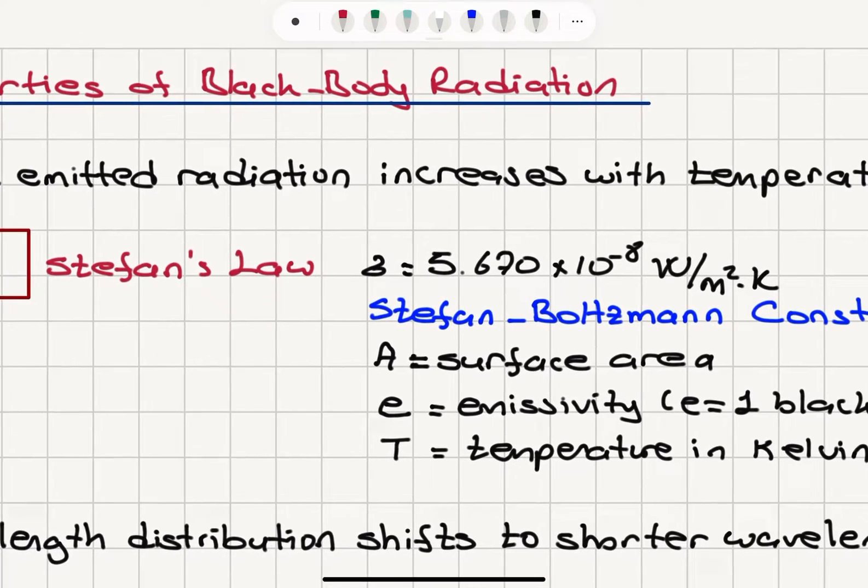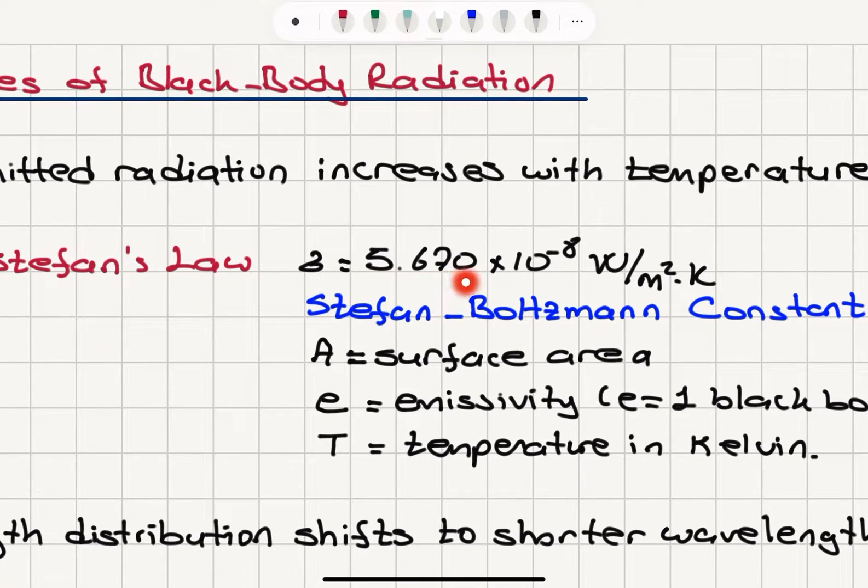This Stefan's constant sigma has a value of 5.670 times 10 to minus 8 watts per meter square Kelvin to the fourth.